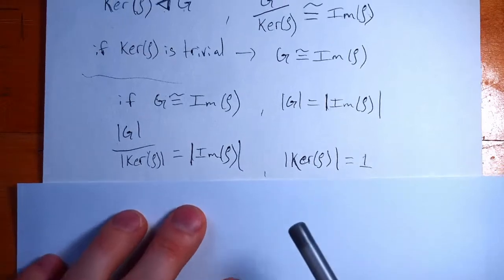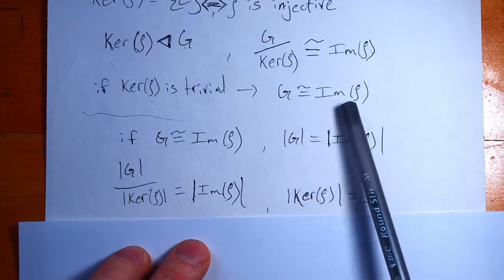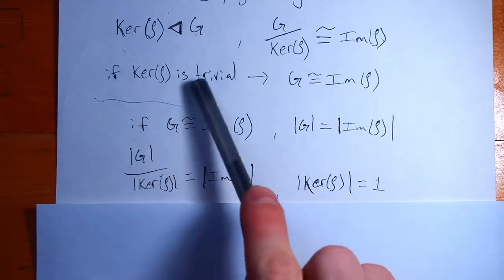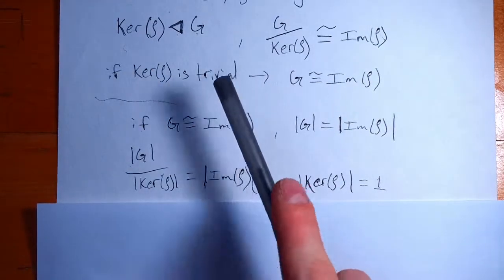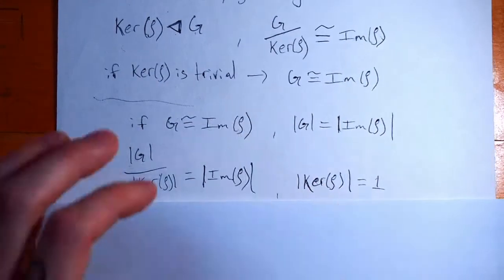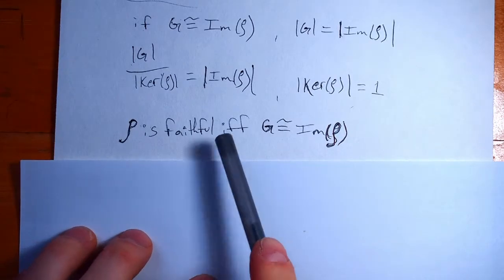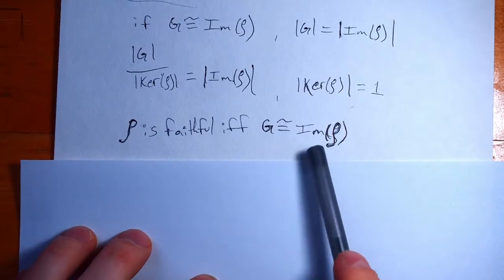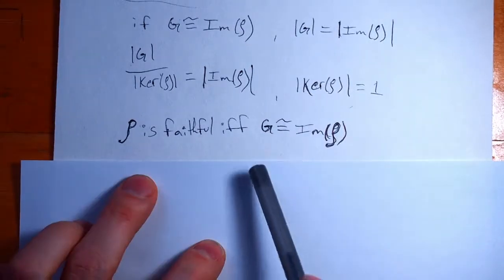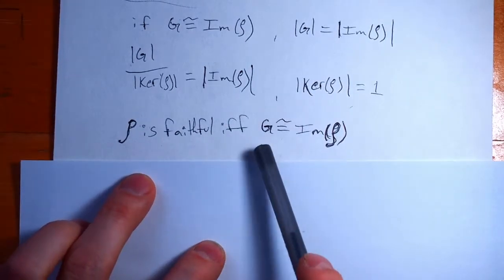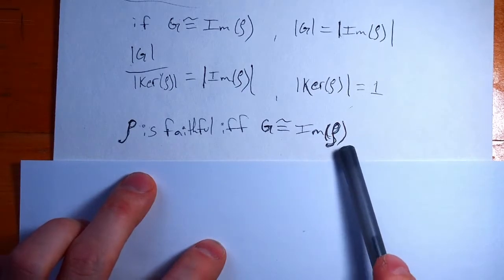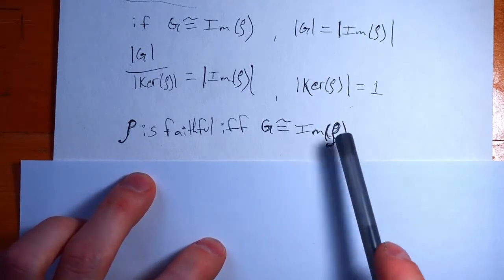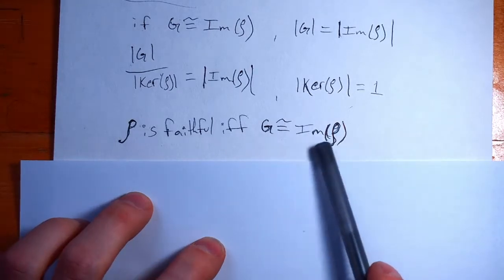Now, put another way, because recall the kernel is trivial, is what it means for our representation to be faithful, we have that a representation is faithful if and only if G, our group, is isomorphic to the image of the representation. That's saying that all the information about our group is exactly contained in the image of the isomorphism, the set of matrices that we get out on the other side, right? This is just injective.